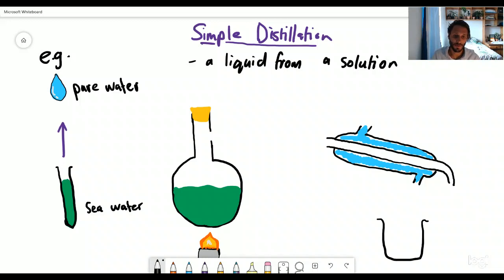So let's have a look at the pieces of equipment that you need for simple distillation. So over here we have our flask, sometimes called a round bottom flask. And this is where we are going to put our solution of seawater. Remember, seawater is salt and pure water. We're trying to separate out the liquid, the water from the salt. So here you've got your flask.